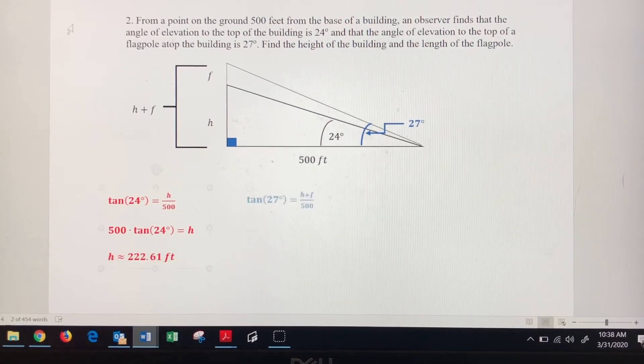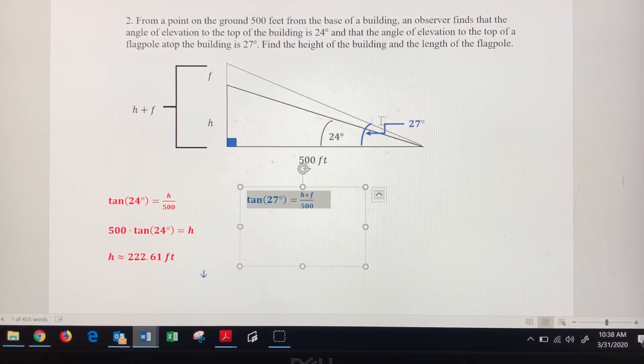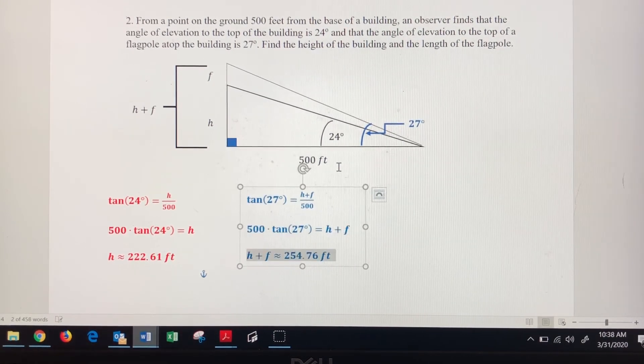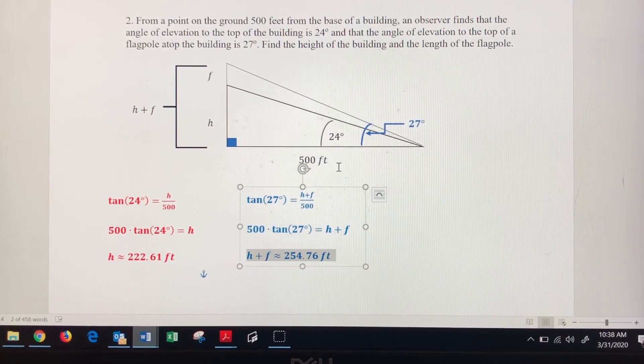So tangent of 27 equals opposite, which is this entire height here, h plus f, divided by adjacent 500 feet. Multiply both sides by 500. Do the math, and the height plus the flagpole is going to be 254.76 feet.